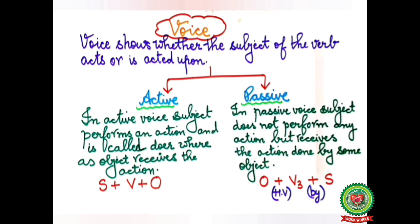Now we will discuss voice and its types. Voice shows whether the subject of the verb acts or is acted upon. Voice is of two types: active voice and passive voice. In active voice, the subject performs an action and is called doer, whereas the object receives the action. The sentence structure of active voice is subject plus verb plus object.